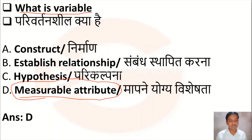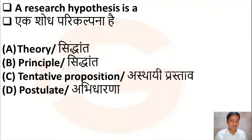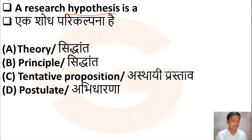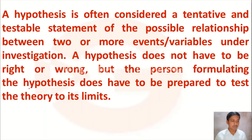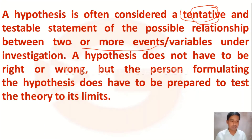The next question is: a research hypothesis is — Option A: theory, Option B: principle, Option C: tentative proposition, Option D: postulate. A hypothesis is often considered a tentative assumption or tentative statement of the possible relationship between two or more variables under investigation.